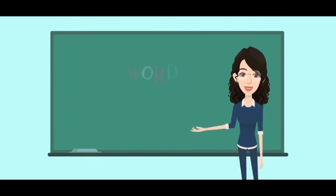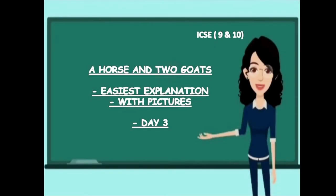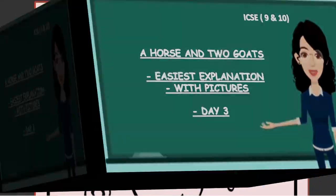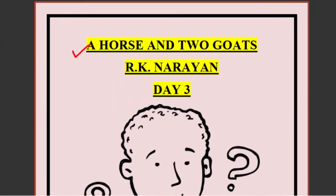Hello everybody, welcome to Word Shard. In today's class we will be starting with 'A Horse and Two Goats.' Today is Day 3 and the story is written by R.K. Narayan. We are doing the ICSE chapters sequentially. Because this chapter is very big and also very interesting, we have divided it into 3 or 4 parts, and I have found some interesting pictures to make it all the more engaging.